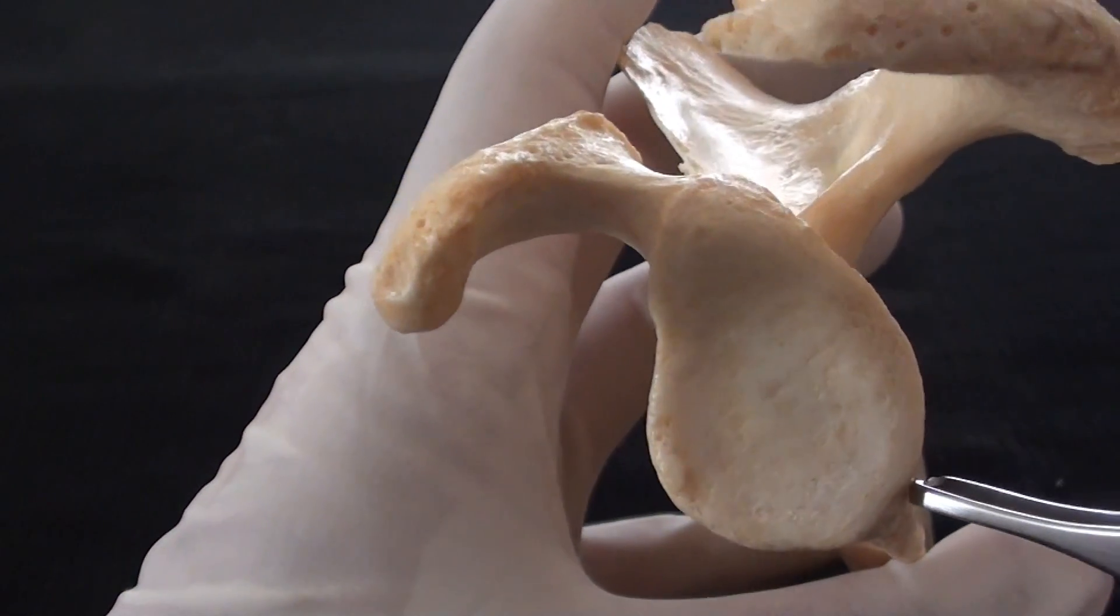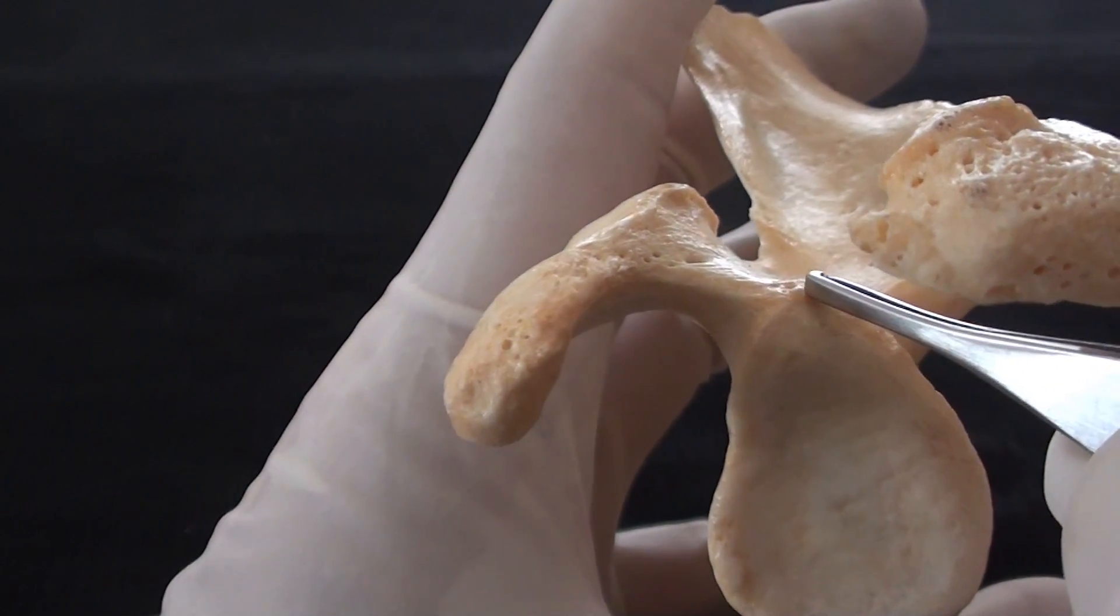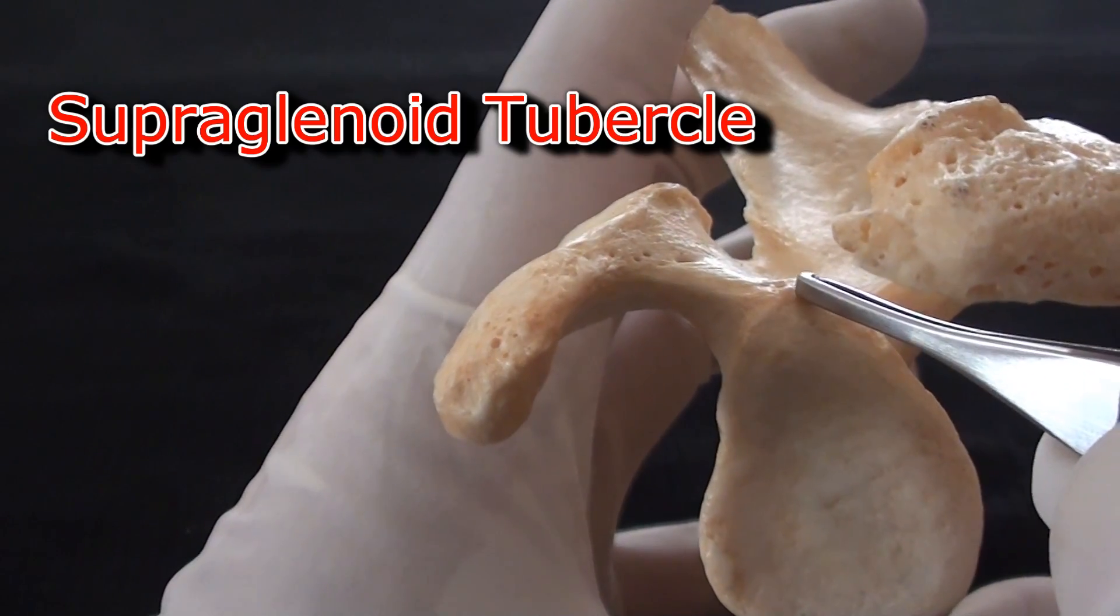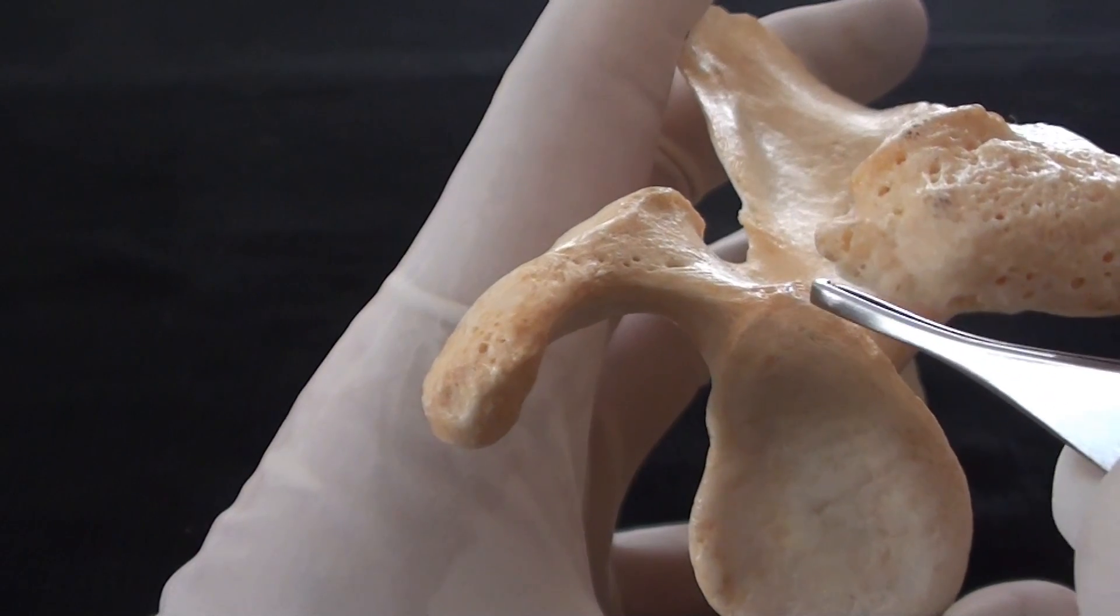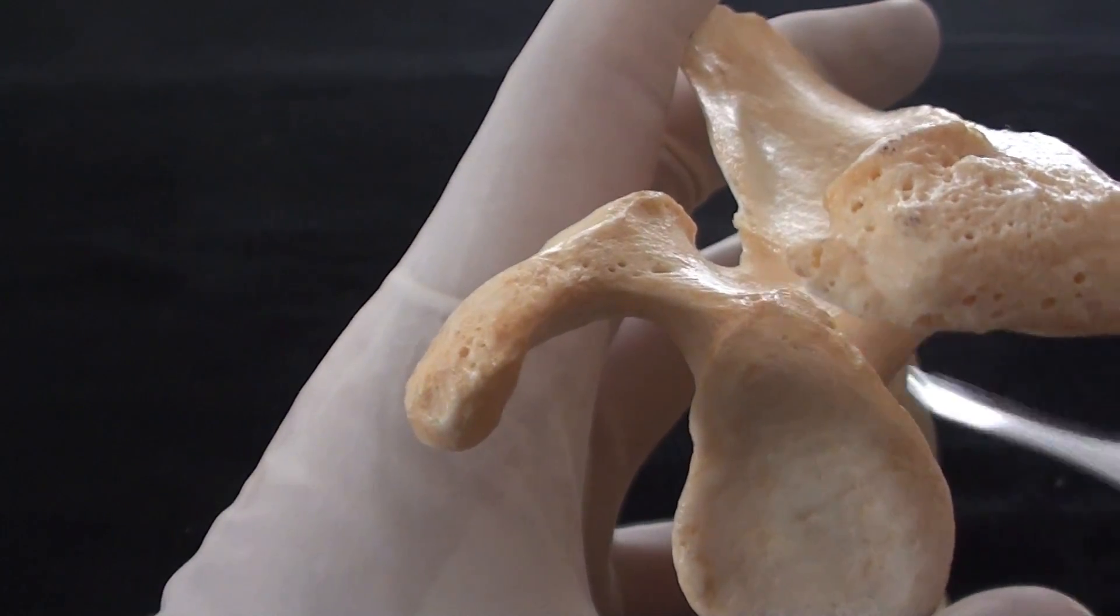Superior to the glenoid cavity there is another much smaller elevation that is known as the supraglenoid tubercle that is also attachment of the long head of the biceps brachii muscle.